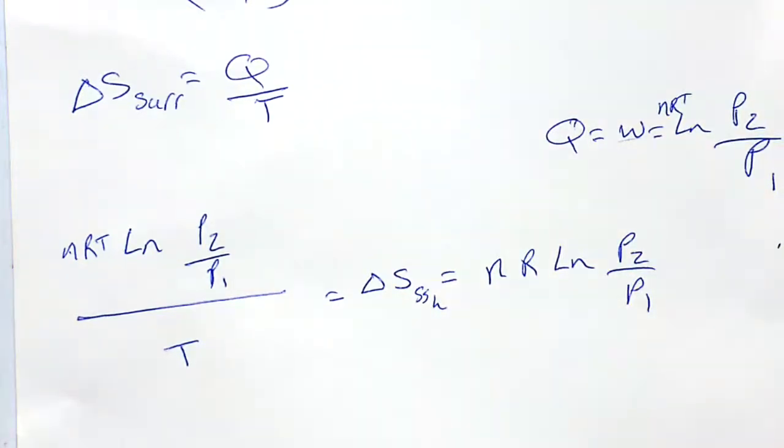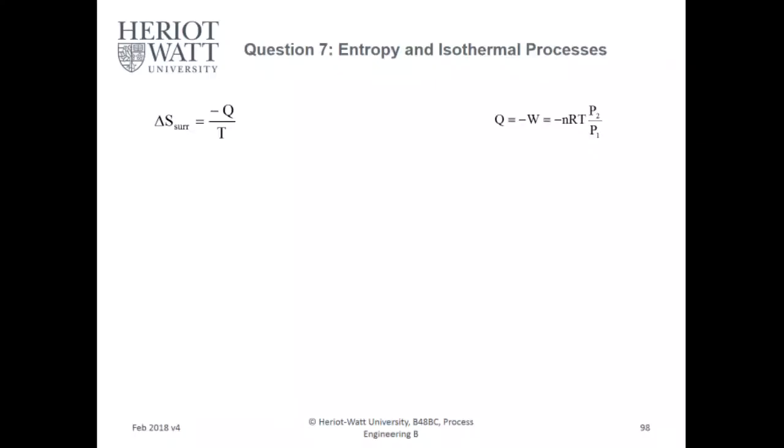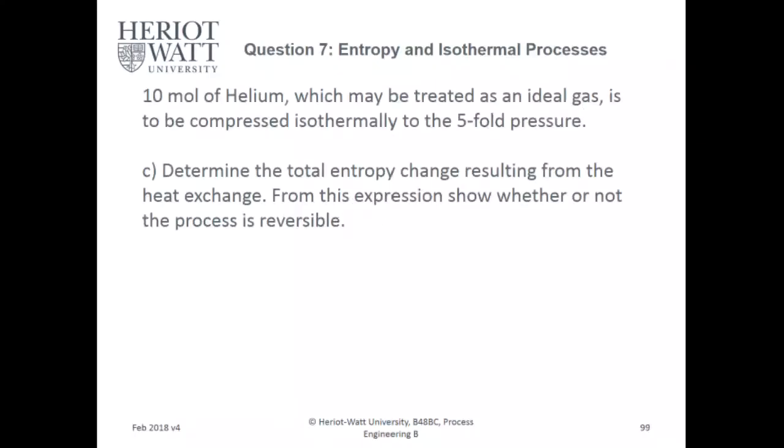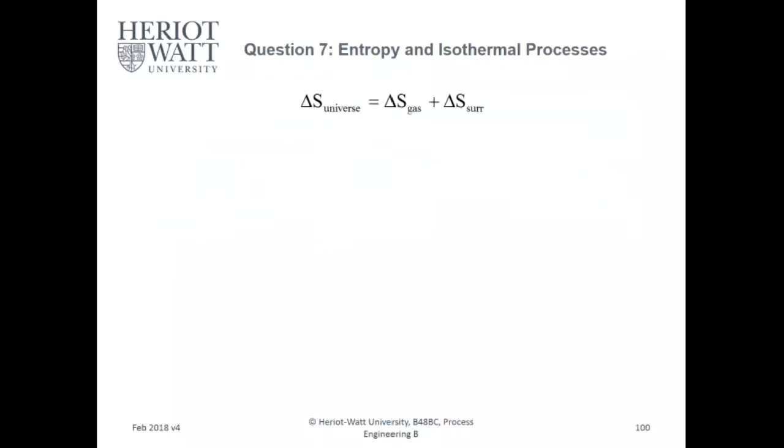Now, if you want to determine the total entropy change resulting from the heat exchange, from this expression show whether or not the process is reversible. Now, since delta S of the universe equals delta S of gas plus delta S of the surrounding, then delta S of the universe is negative nR log of P2 over P1 plus nR log of P2 over P1. Hence, there is no entropy change for this process, and it's reversible.